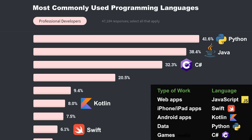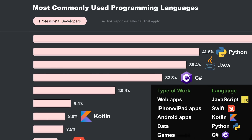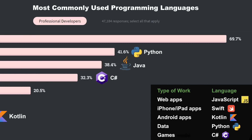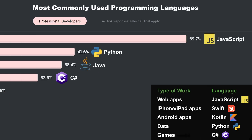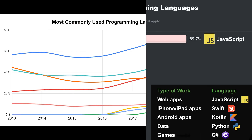But all of these languages don't even come close to the number one language on this chart: JavaScript. At an unbelievable 69.7% — nearly 70% — a large majority of the developers they surveyed say that they use JavaScript. Chances are, if you're applying for a job, you're either going to be using JavaScript or the company has JavaScript somewhere in the product and they have a JavaScript team.